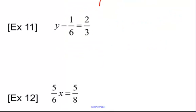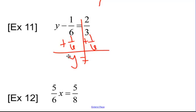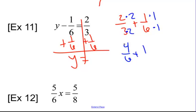Number 11 here. y minus 1 sixth equals 2 thirds. Well, we're going to add 1 sixth to both sides. So now, let's do it off to the side. 2 thirds plus 1 sixth. Well, I know that 3 goes into 6, so I can multiply that by 2, that by 1, and I'm going to get 4 sixths plus 1 sixths, which is 5 sixths.